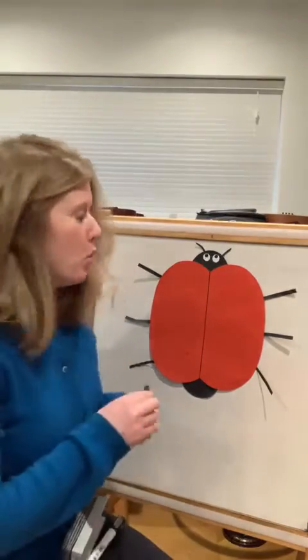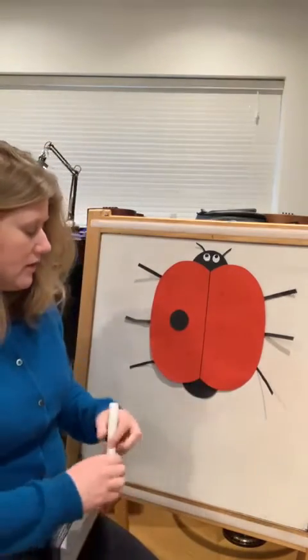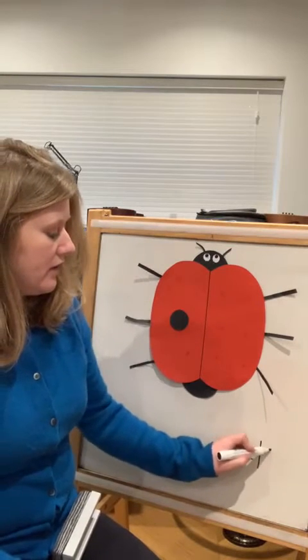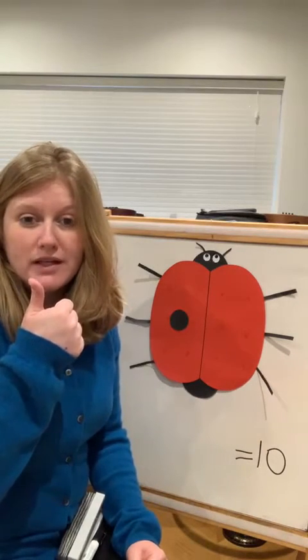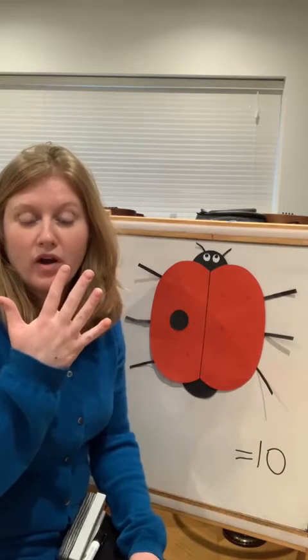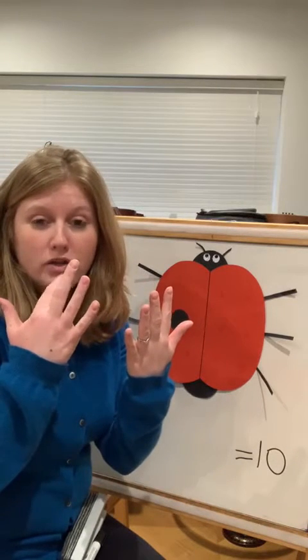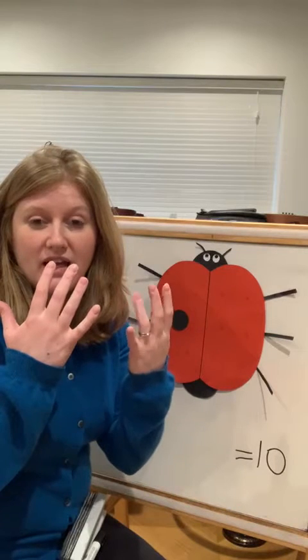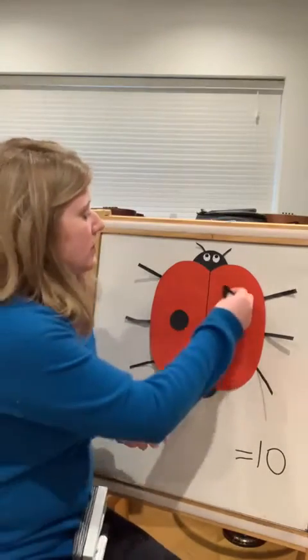See if you can help me out again today. If I put one spot on this side of Lucy the ladybird, how many spots do I need on this side to equal ten? I've got one — how many more do I need to make ten? Let's count up together: two three four five six seven eight nine ten. So I had to add one two three four five six seven eight nine fingers, plus one more makes ten.